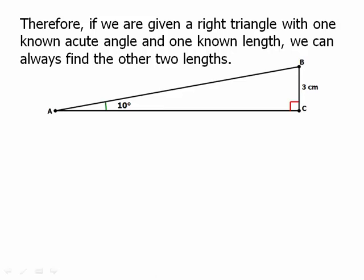So suppose we have this set up. We have a right triangle. We have an angle of 10 degrees, a tiny little acute angle, and opposite that 10 degree angle, the opposite side is 3 centimeters. And we want to find the other two lengths, for example.